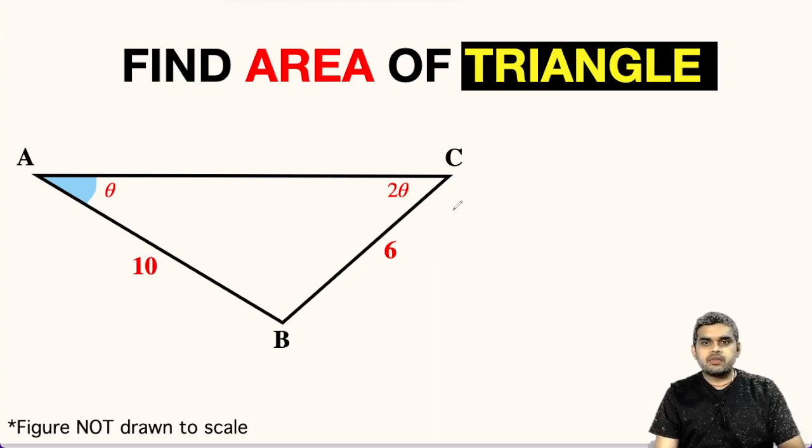Welcome to my YouTube channel, I am back with an interesting question today. In this figure, a triangle ABC is shown where angle A is theta, angle C is twice theta. Also, the measure of side AB is 10 units and BC is 6 units. Here it is given that the figure is not drawn to scale.